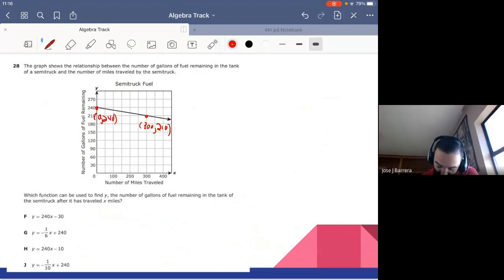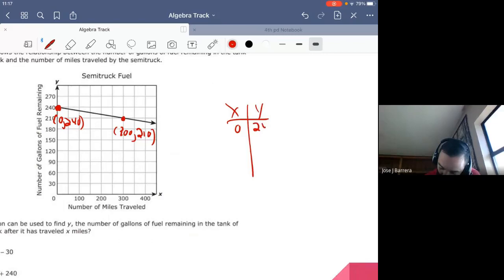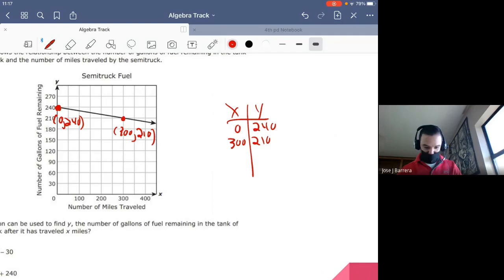Number 28. Which function can be used to find why the number of gallons of fuel remaining in the tank of the semi truck after it has traveled X miles? The best way to do this is to get your XY coordinates. Two of them that pass on the grid. This one passed on the grid and this one passed on the grid. That is why I labeled those 0, 240, 300, 210. That means now I have two coordinates that I'm going to plug into your table in the calculator. So you go to list and spreadsheets. You plug in your X. You plug in the Y. And then you're going to plug in the numbers that we come up with here in the table.